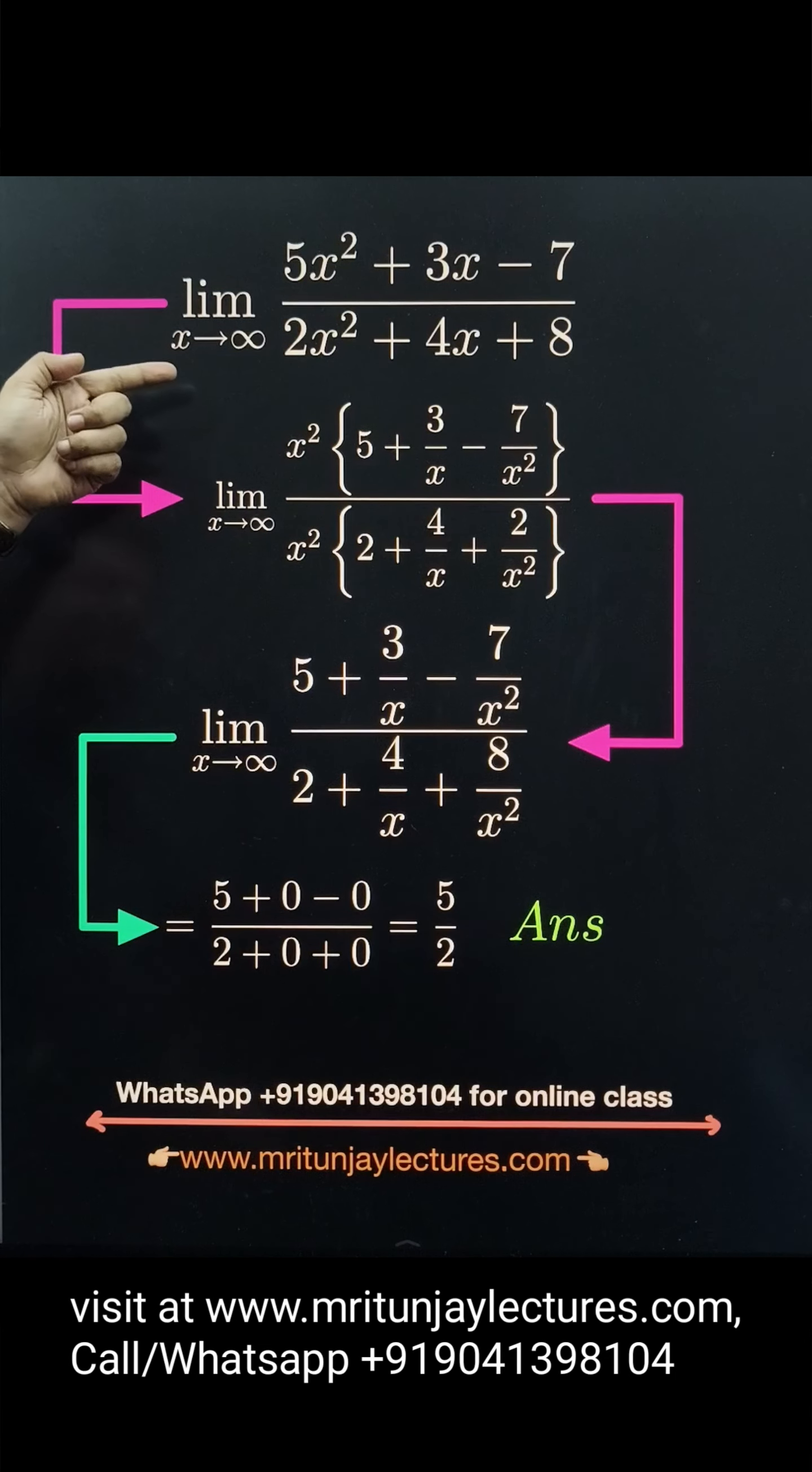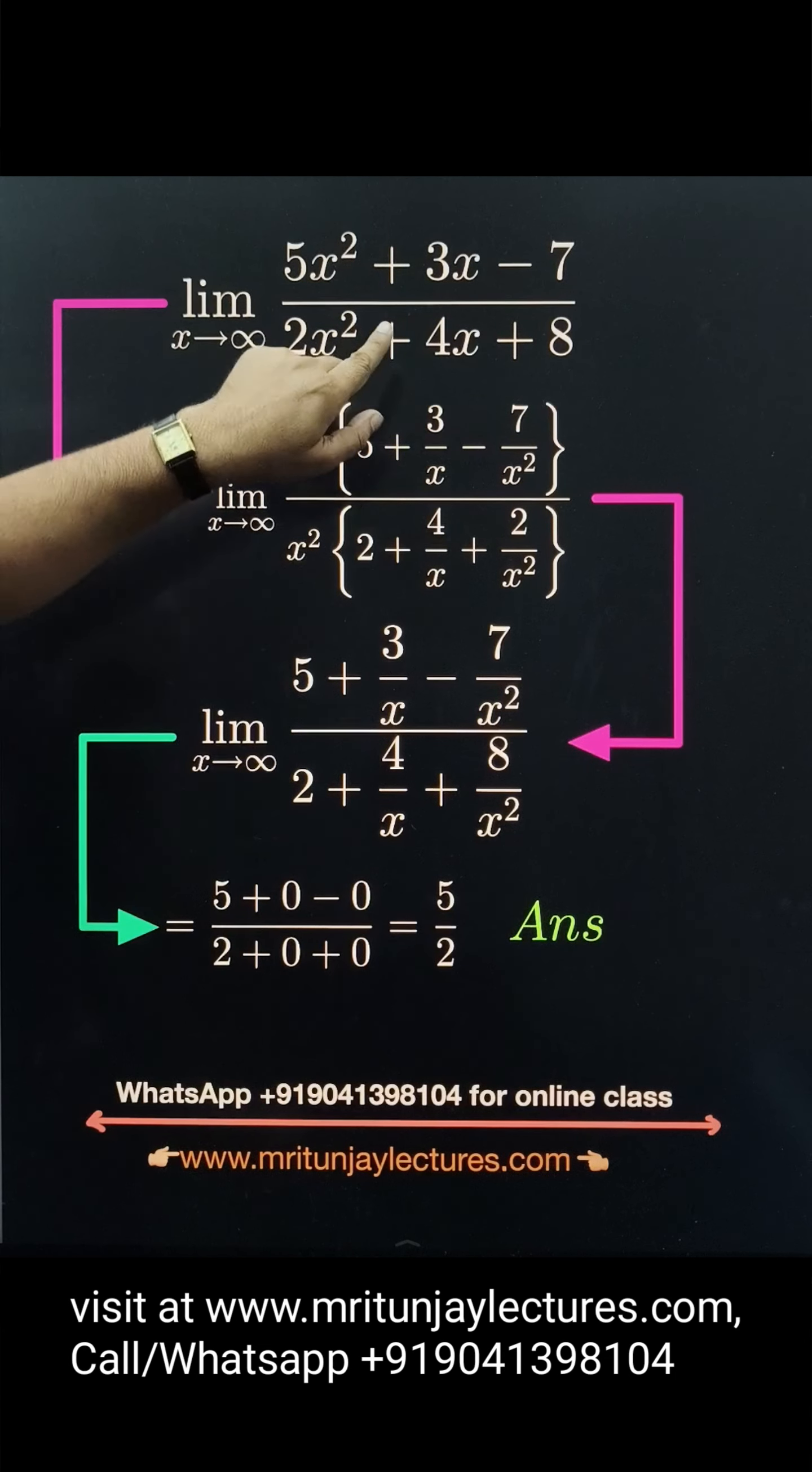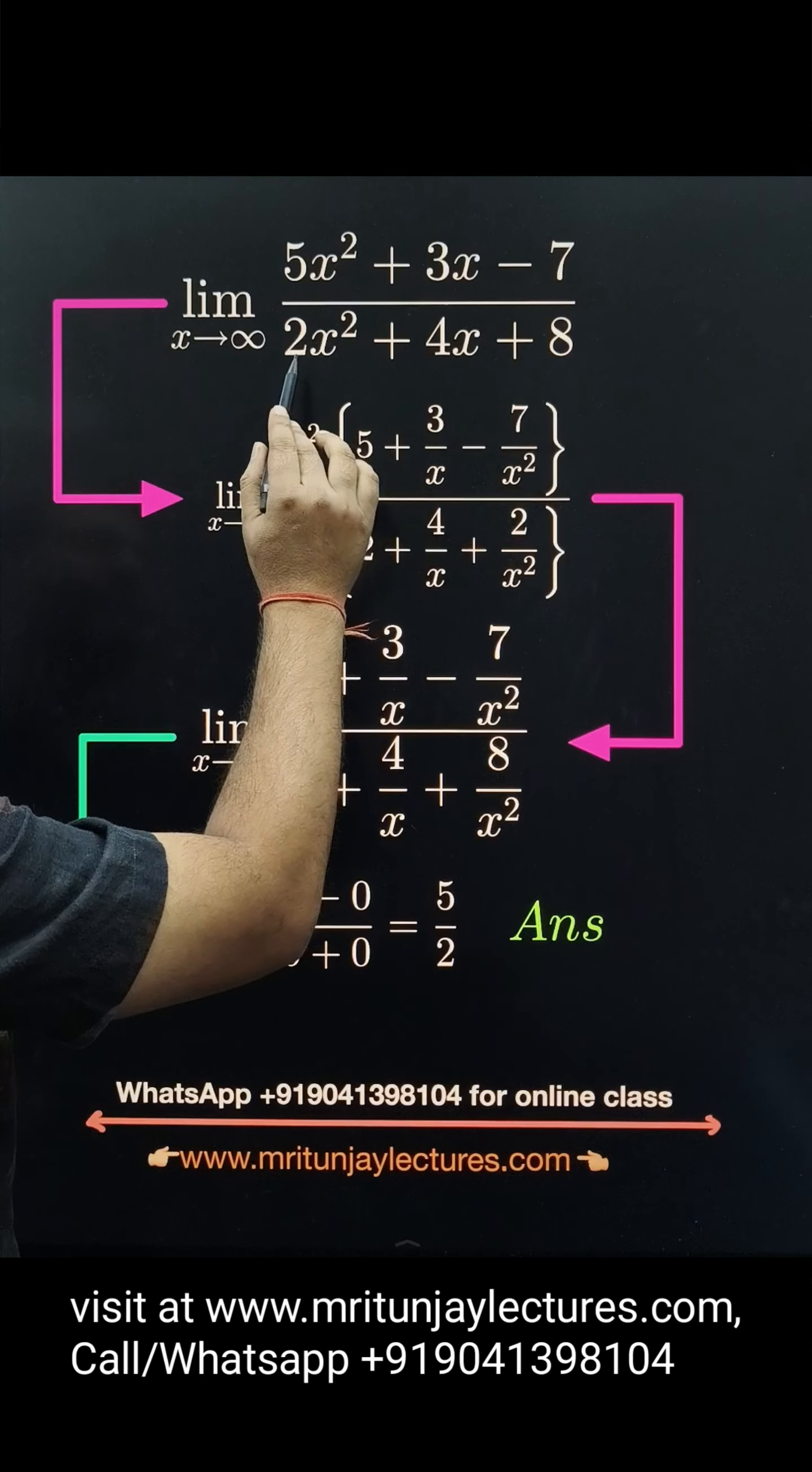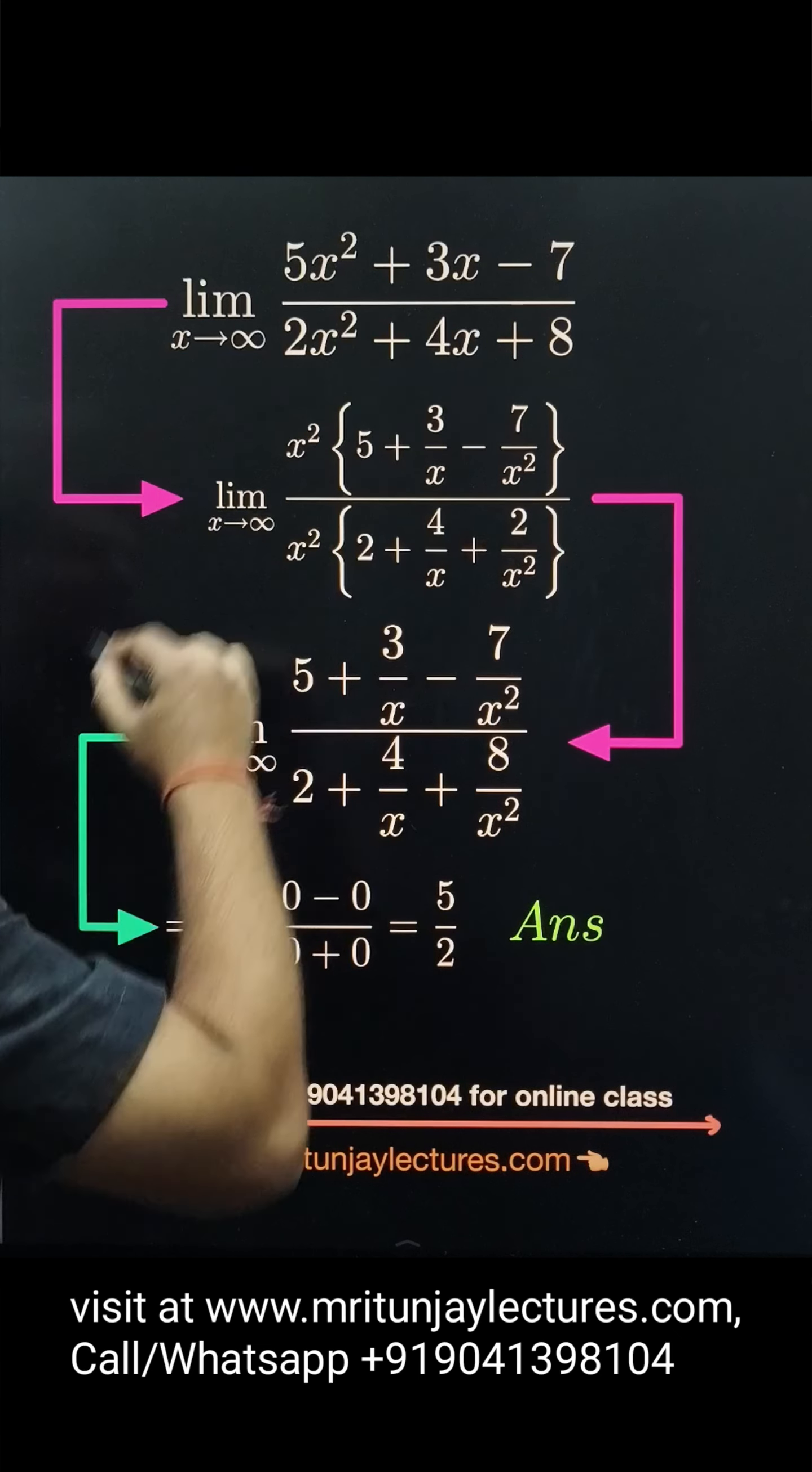Now, question of the day: limit as x tends to infinity. Here, 5x² + 3x - 7 divided by 2x² + 4x + 8.